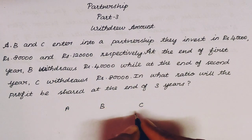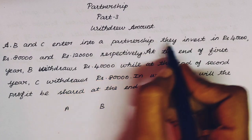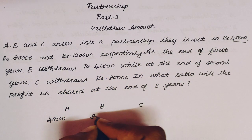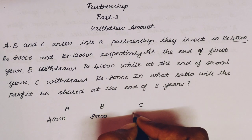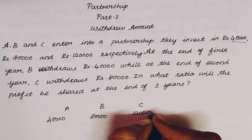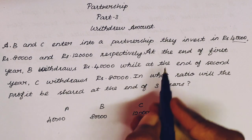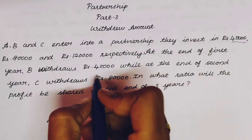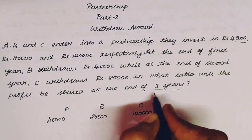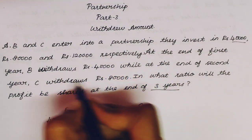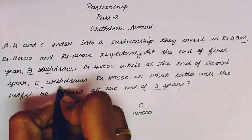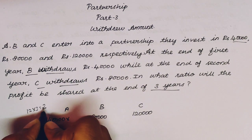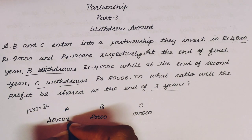We need to find the profit share ratio. We have 3 members A, B, C with initial investments: A = 40,000, B = 80,000, C = 1,20,000. The total duration is 3 years, which is 36 months. A invests for the entire 3 years. For B, at the end of the first year — that is 12 months — B withdraws Rs. 40,000. So B's initial investment of 80,000 runs for the first 12 months.